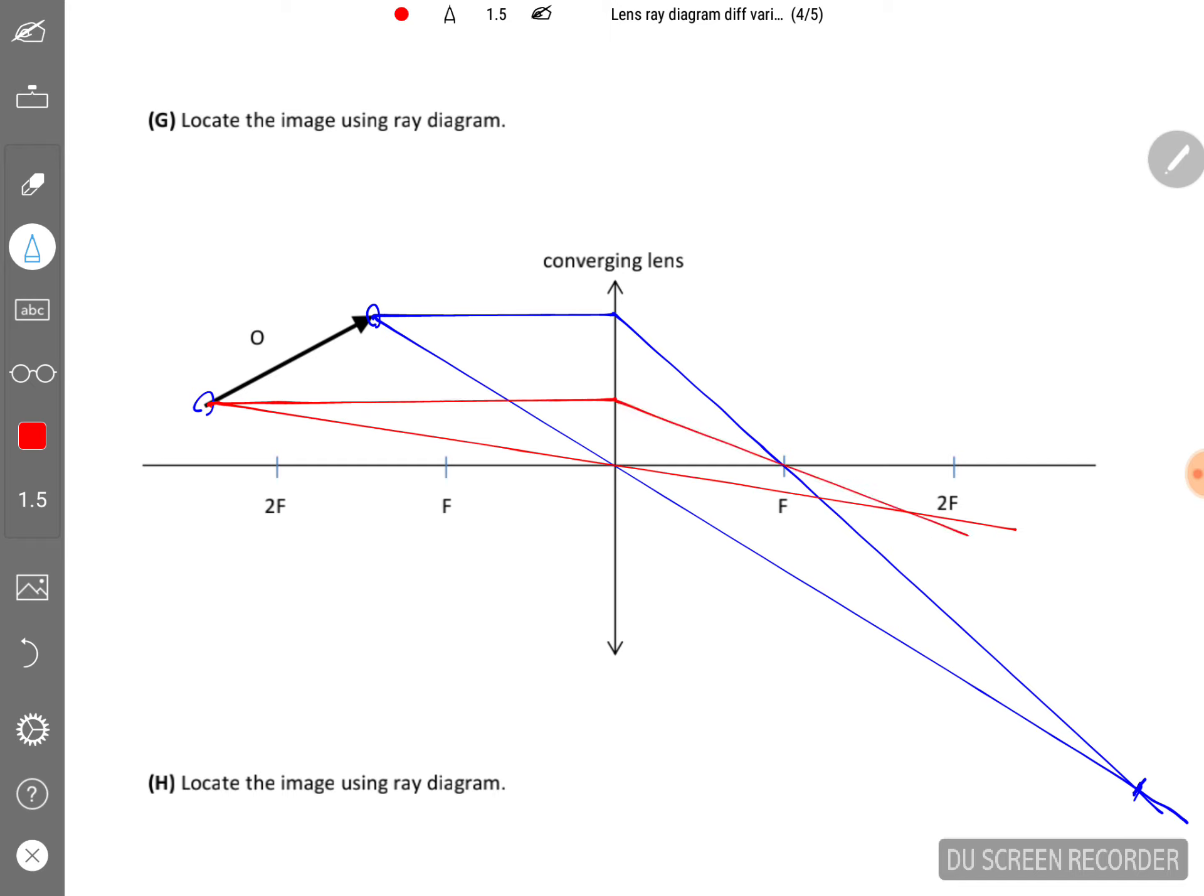And then this intersection here will be the tail of the image. So what you need to do now is to join these two points together, and that will be the position of the image. So then put in the arrows.